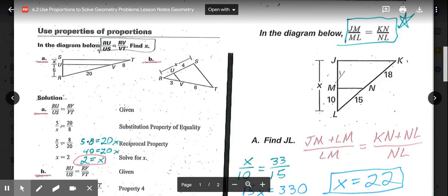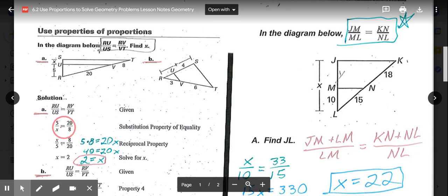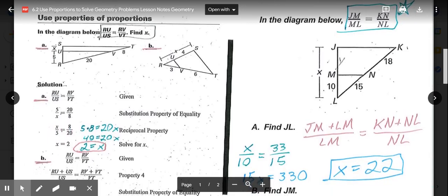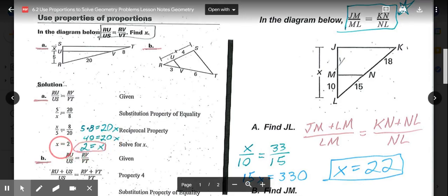According to the original here, RU/US, so RU is 5, US is X, equals RV, which is 20, over VT, which is 8. So 5/X = 20/8. Then they flipped it, just showing the reciprocal property still works. You don't actually have to do that. Then you're going to cross multiply and divide. So 5 times 8 equals 20 times X. 5 times 8 is 40. Divide both sides by the 20 to get X alone, and X equals 2.